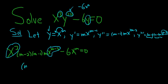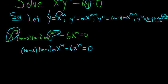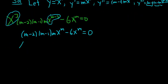So we have (m - 2)(m - 1)mx^m - 6x^m = 0. At this point, we can factor out an x^m. So we get x^m[m(m - 1)(m - 2) - 6] = 0. We can divide by x^m, so that goes away.